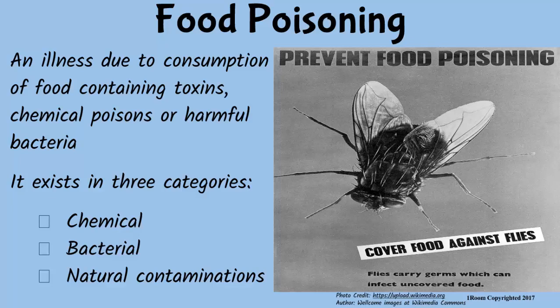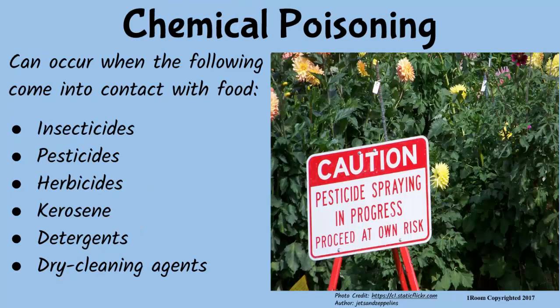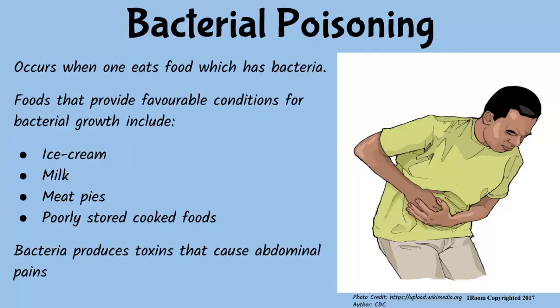Chemical poisoning is caused by agrochemicals, kerosene, detergents, and dry cleaning agents. Bacterial poisoning is caused by bacteria which enter the human body when you eat contaminated food. The bacteria inhabit the alimentary canal, where they multiply to cause harm.